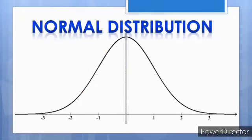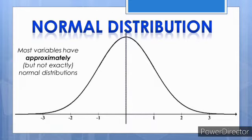The normal distribution is a theoretical concept of how large samples of ratio or interval level data will look once plotted. Since many variables tend to have approximately normal distributions, it is one of the most important concepts in statistics.